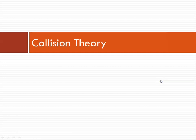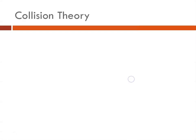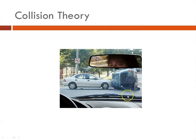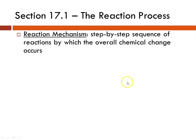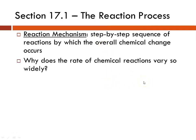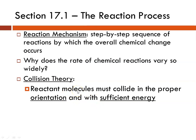We begin talking about kinetics by talking about collision theory — not car collisions, but the reaction process. In order for a reaction to take place, there's typically a step-by-step sequence of reactions where the overall chemical change takes place. The rate of a chemical reaction varies widely because reactant molecules have to collide with one another, and they have to have the right orientation and the correct energy.